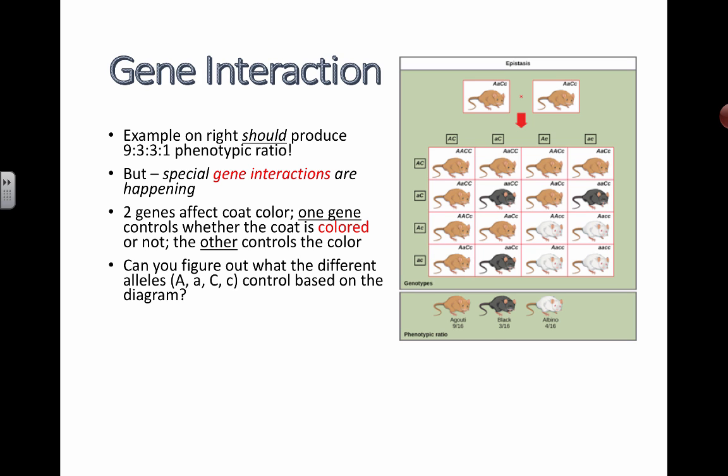So all of the rest of these mice here that have some color, these brown or black mice, all have a big C somewhere in there. So it tells me that I'm probably guessing that big C big C means there's color. Little c is a recessive allele that means there's no color.